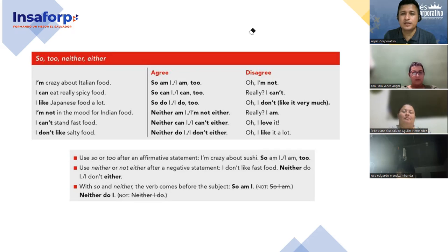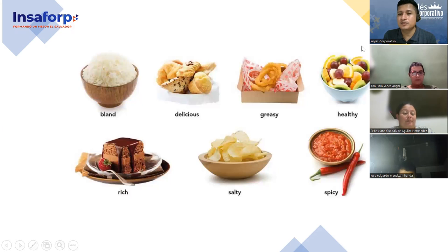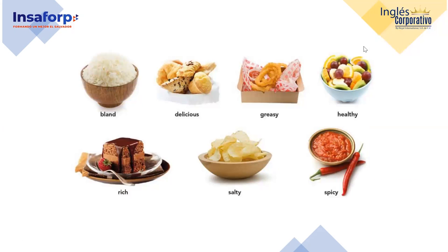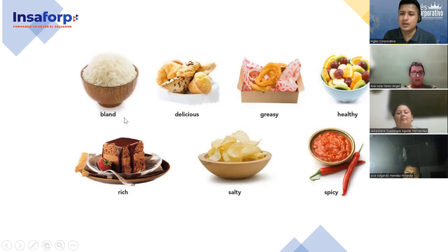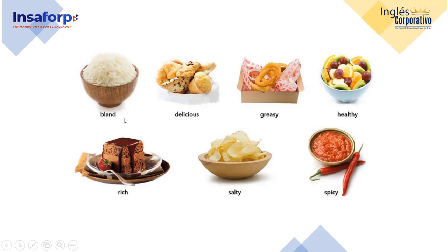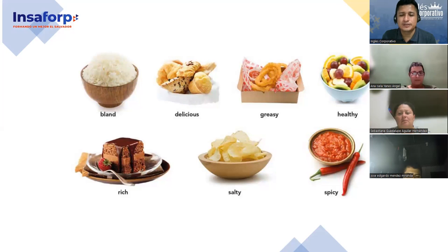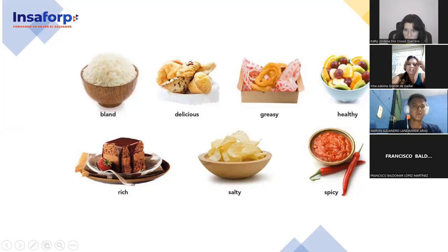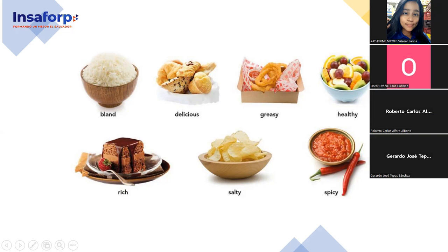Let's have some exercises for practice. We have some extra vocabulary about food. Sebastiana, read the vocabulary please: bland, delicious, greasy, healthy, rich, salty, spicy. Tell me one example related to 'bland' — vegetable, for example potato. Also spaghetti, noodles, milk, cheese. Very good, thank you. Oscar, with 'greasy' — what is something greasy for you? Fried chicken. Yes — delicious, but not nutritious. Bad for your health.